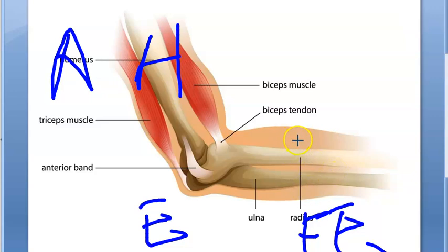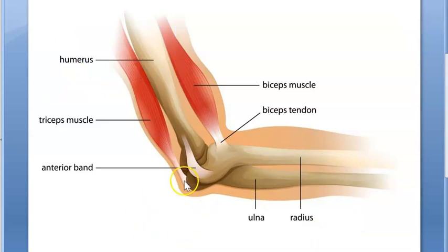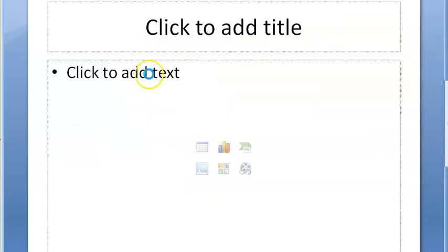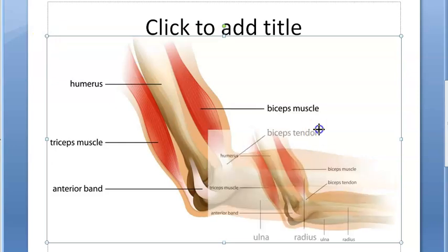Laterally you have what is called the radius and medially you have the ulna. So this is the elbow joint. How do you define a joint? What are we looking at here? A joint.